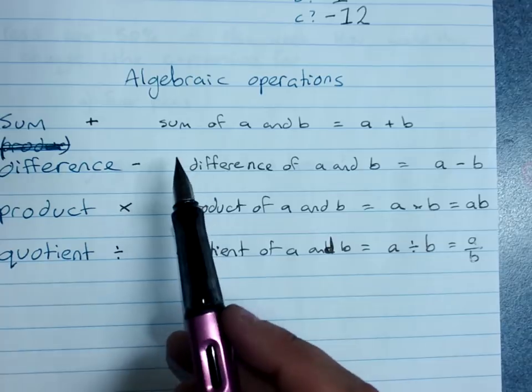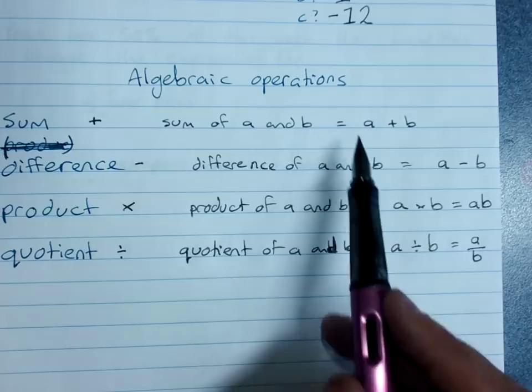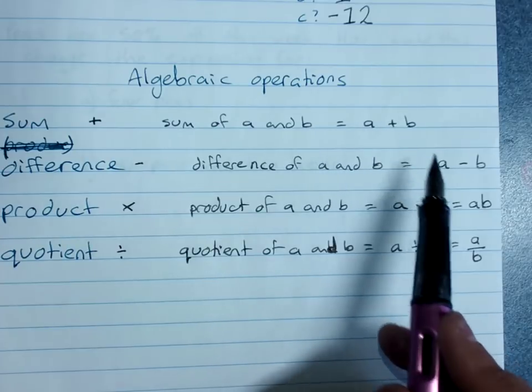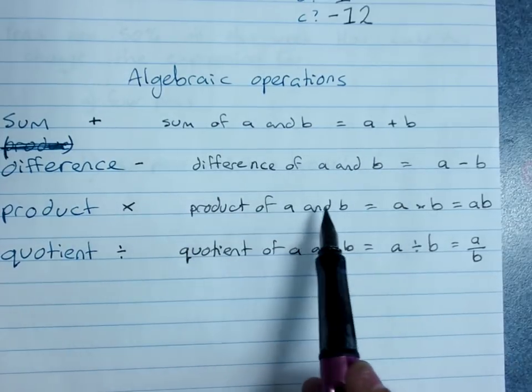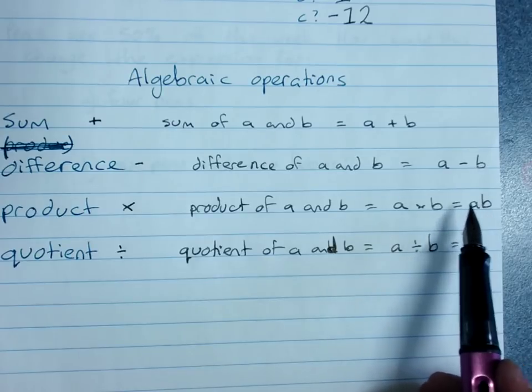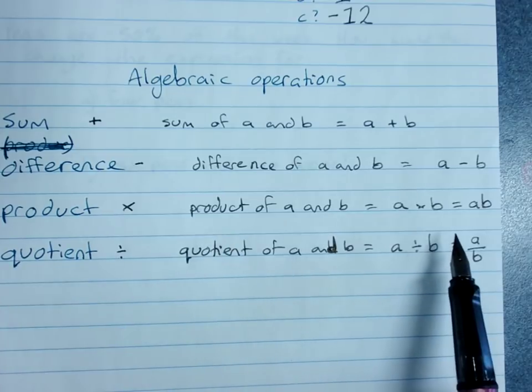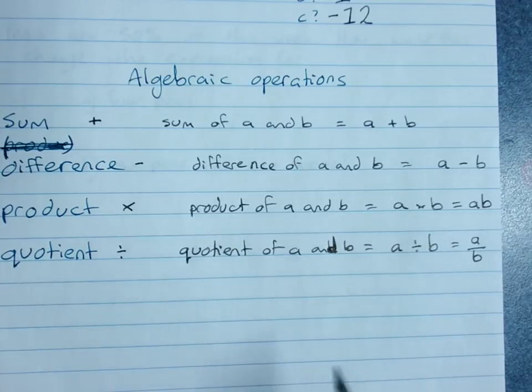So we're just remembering the sum, the difference, the product and the quotient. Adding and subtracting with algebra, we still write plus and minus. Multiplying, we just write the two letters or the number and the letter together. No times sign involved. And dividing, we use over, usually instead of the divide sign.